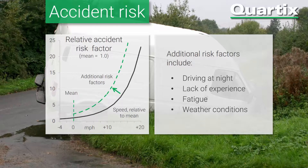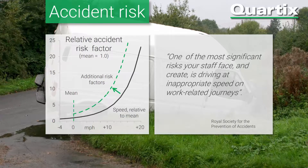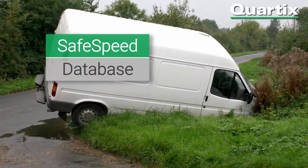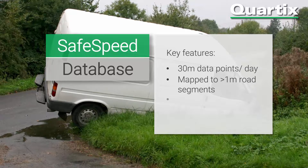Rossber states that one of the most significant risks your staff face and create is driving at inappropriate speeds on work-related journeys, and this is why we developed our Safe Speed database. It gathers 30 million data points from fleet vehicles every day and maps them against more than 1 million road segments. These distributions are used to provide a better way of measuring accident risk with your drivers.